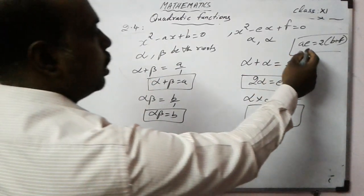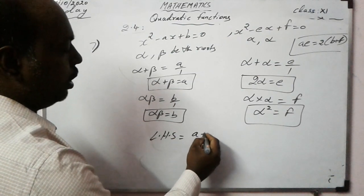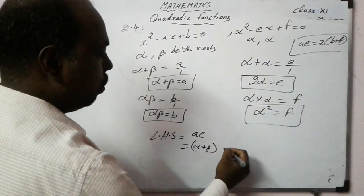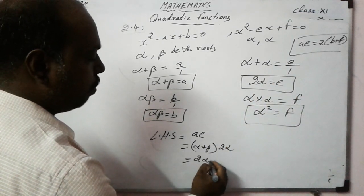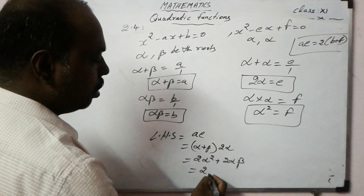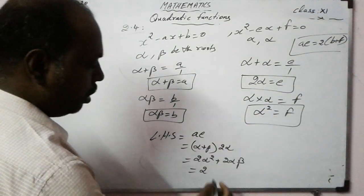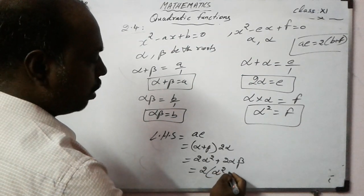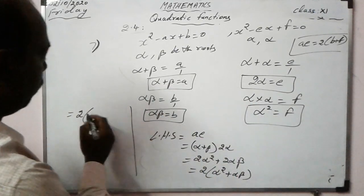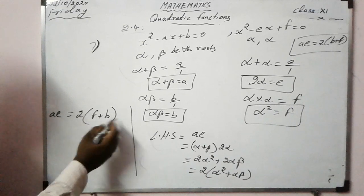LHS = a·e = (alpha+beta)(2·alpha) = 2·alpha² + 2·alpha·beta. Taking 2 outside: 2(alpha²+alpha·beta) = 2(f + b) = 2(b+f) = RHS. Hence proved.